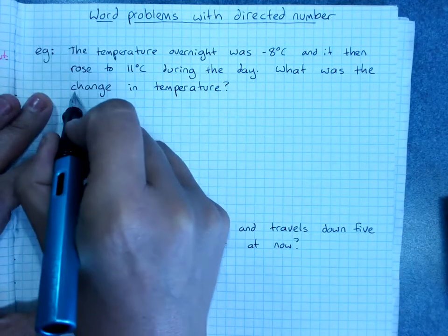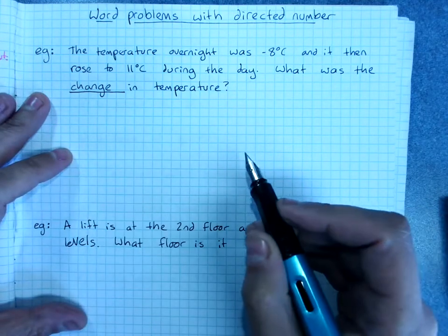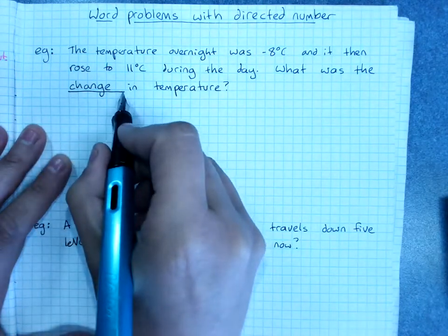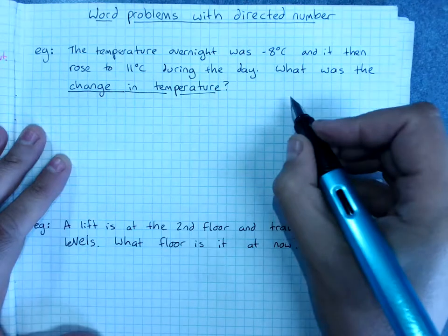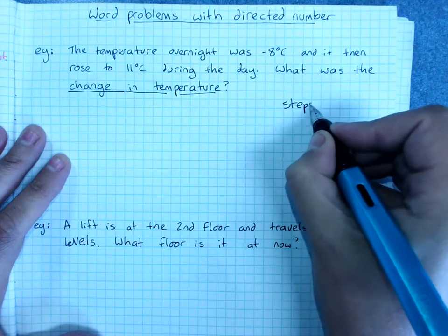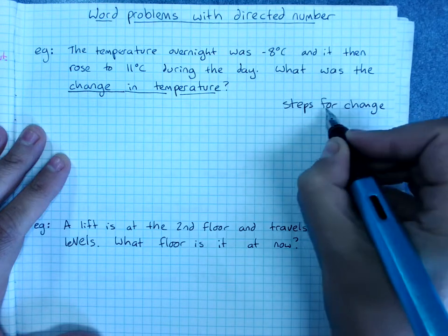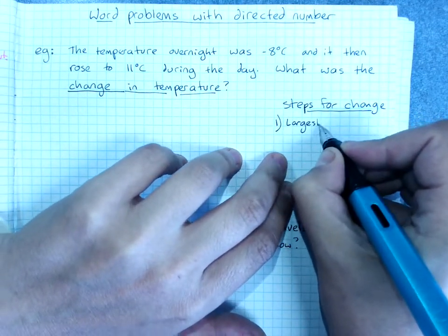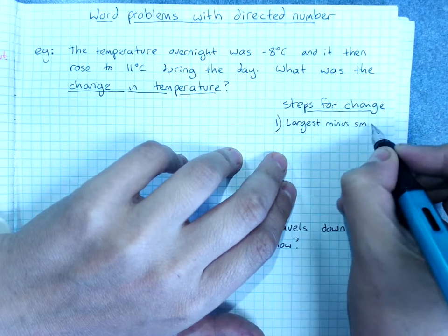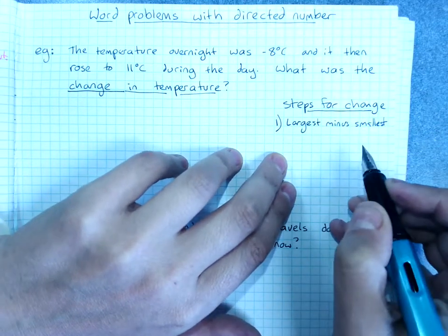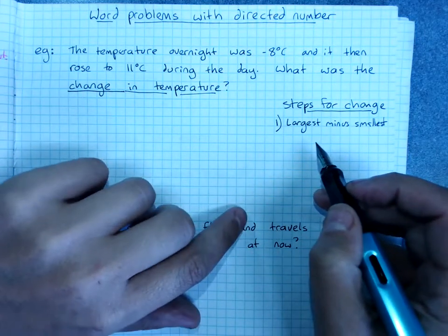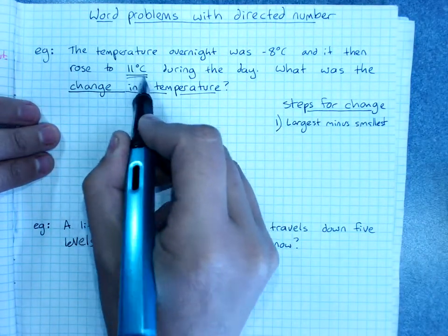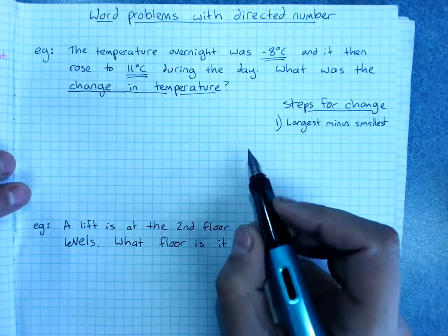Some questions will ask you for what the change was. Some of the questions will ask you for what the new value is. This one's asking for the change in temperature. So when they're asking you for change, the steps to find change is do a sum of largest minus smallest. You've still got to allocate the correct integers, the correct directed numbers. So the largest value here was 11 degrees Celsius and the smallest was negative 8 degrees Celsius.